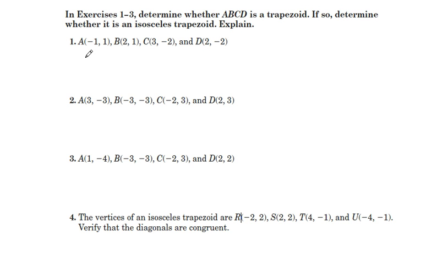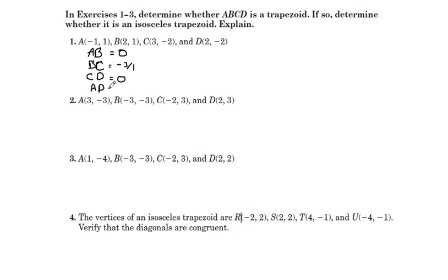We need to find the slopes of all the sides: AB, BC, CD, and AD. Slope of AB is zero. Slope of BC is negative three over one. Slope of CD is zero. Slope of AD is negative three over three.